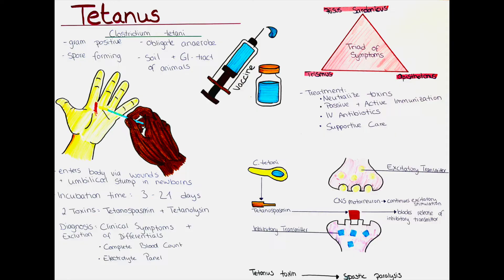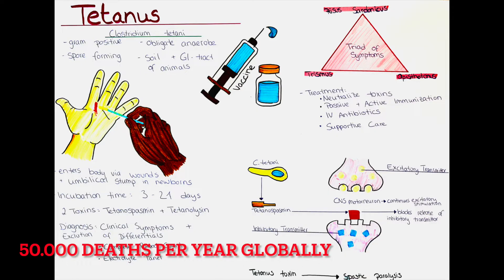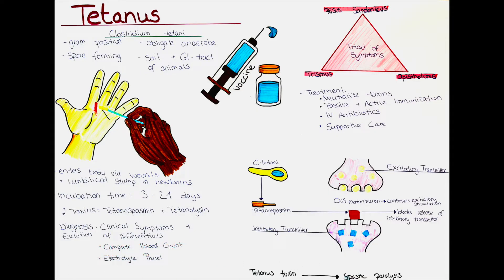In which areas can tetanus be found? It occurs globally and is particularly prevalent in regions with poor sanitation and low vaccination rates. Tetanus leads to around 50,000 deaths globally per year. With the introduction of vaccine programs, the number of cases was reduced drastically in areas of the world where the vaccine is readily available.